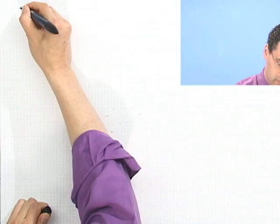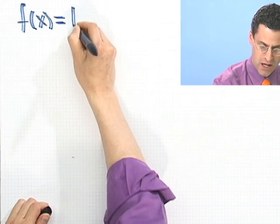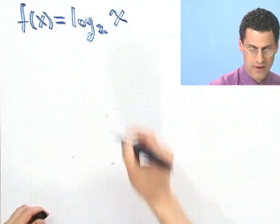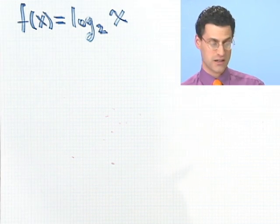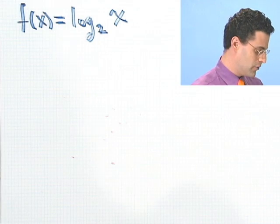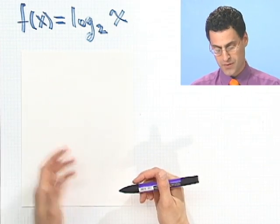Let's begin with a standard looking one. How about if the function f(x) were to be log base 2 of x? And I want to know what that graph looks like. Well, one thing we could do is just plot some points and get a sense of what this thing looks like.